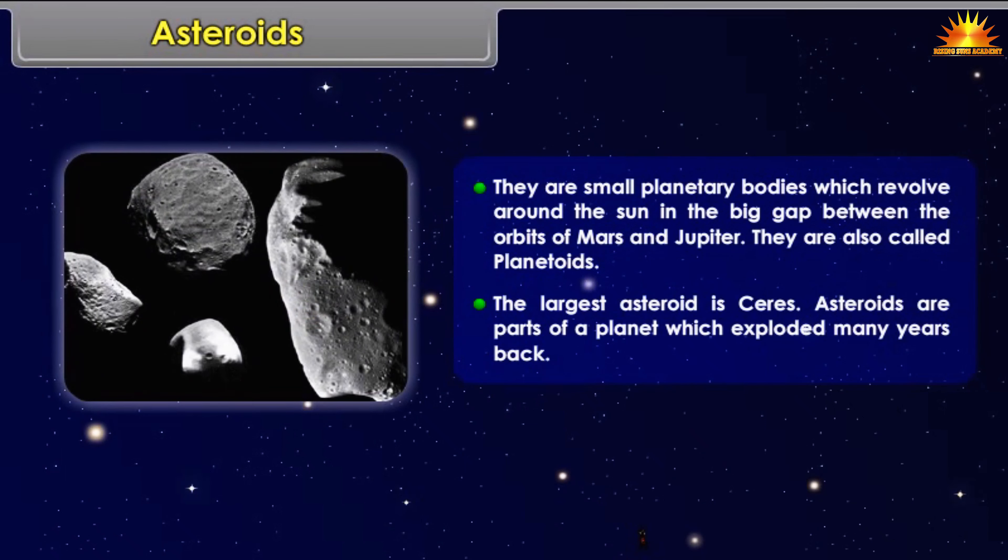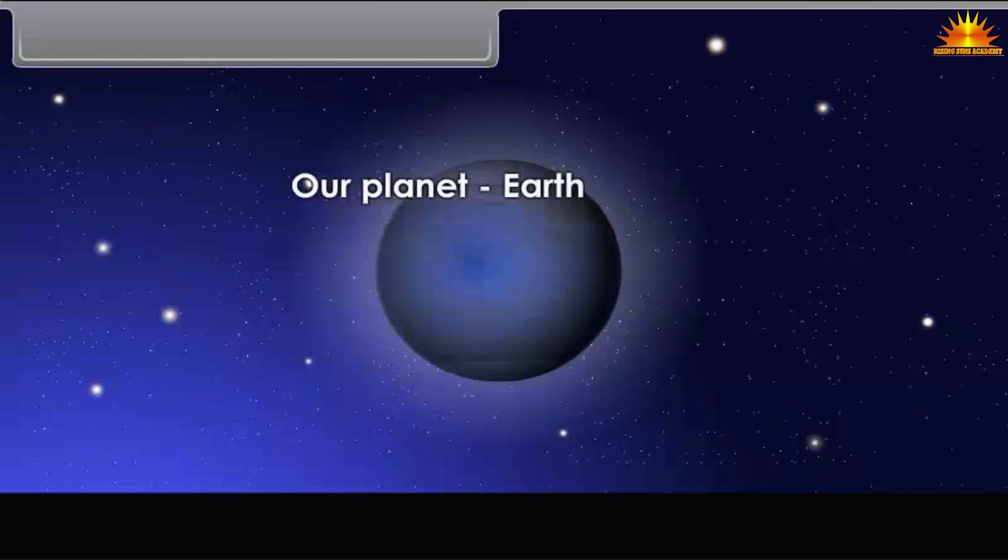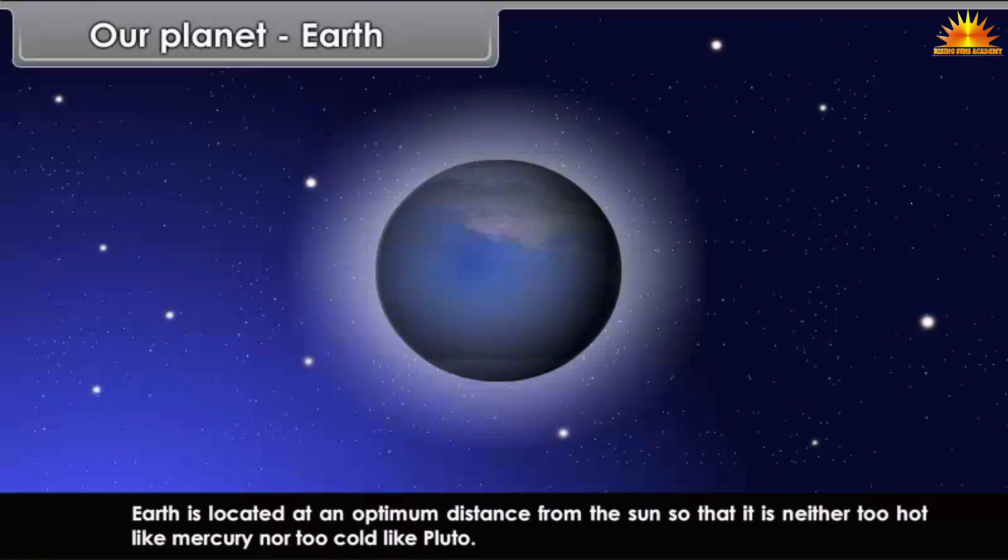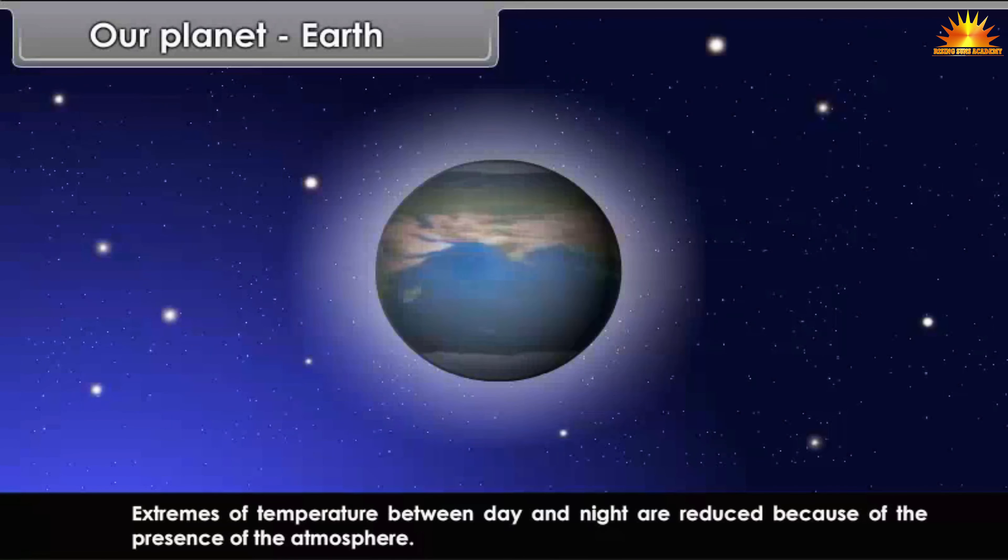Our planet Earth: Earth is located at an optimum distance from the Sun, so that it is neither too hot like Mercury, nor too cold like Pluto. Extremes of temperature between day and night are reduced because of the presence of the atmosphere.